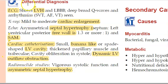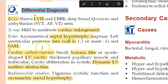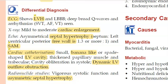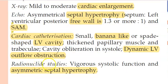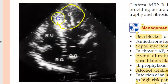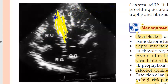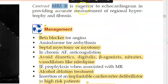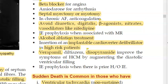Radionuclide studies show asymmetric septal hypertrophy. On echo you can see the left ventricle, right ventricle, and significant ventricular septal hypertrophy between them. Contrast MRI can also be performed as an investigation.